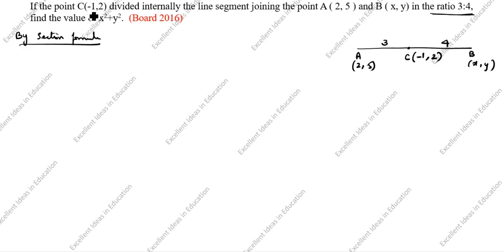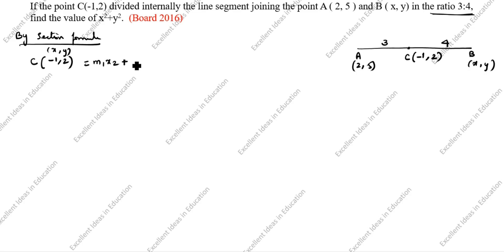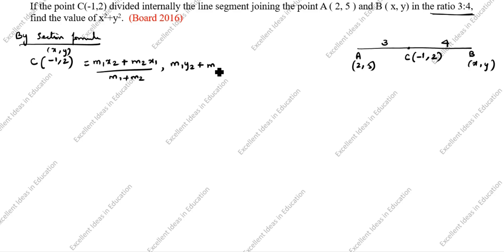What is the section formula? Here C is given as (-1, 2), which we take as (X, Y). The section formula is: (M1·X2 + M2·X1) / (M1 + M2), (M1·Y2 + M2·Y1) / (M1 + M2).